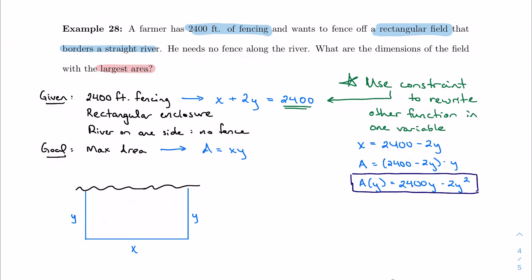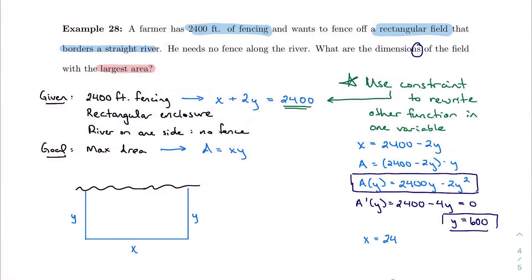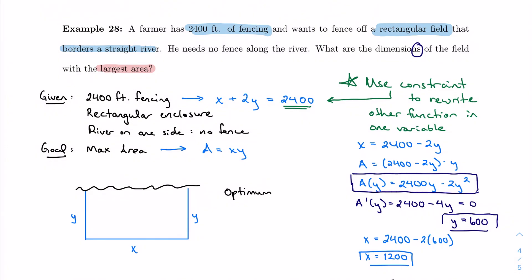And now I have an equation in one variable, and I can proceed like normal. So we're going to derive. Set equal to zero. I'm going to get y equals 600. So here's one part of my dimension. I want dimensions, so I need x and y. So here's y. How do I find x? Well, I'm just going to go back to my rearranged constraint. So I'm just going to get 2400 minus 2 times 600, and I get 1200. So this tells me that my optimum dimensions are 1200 feet by 600 feet.